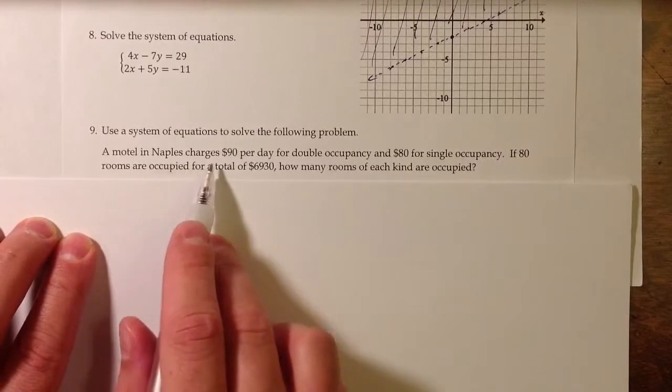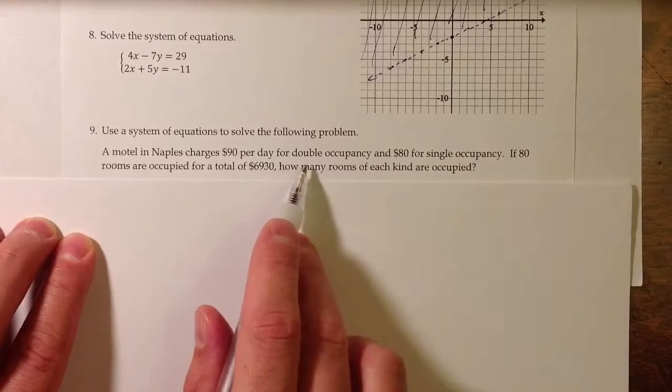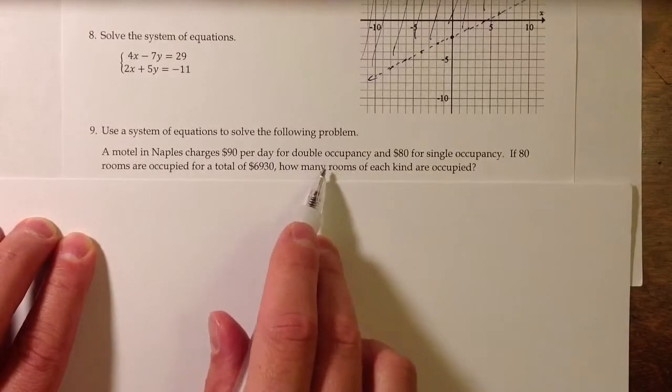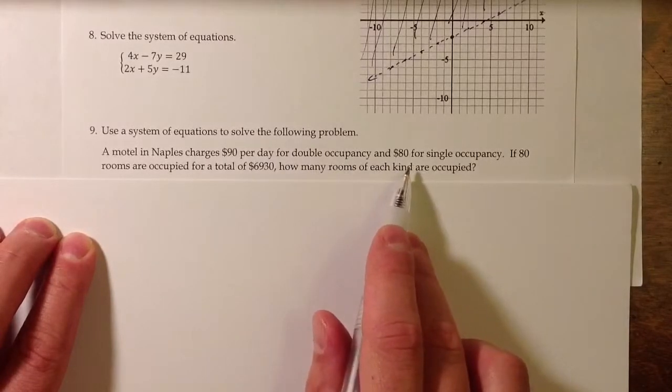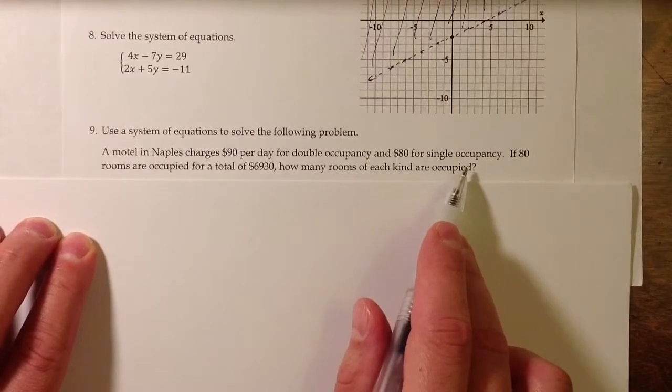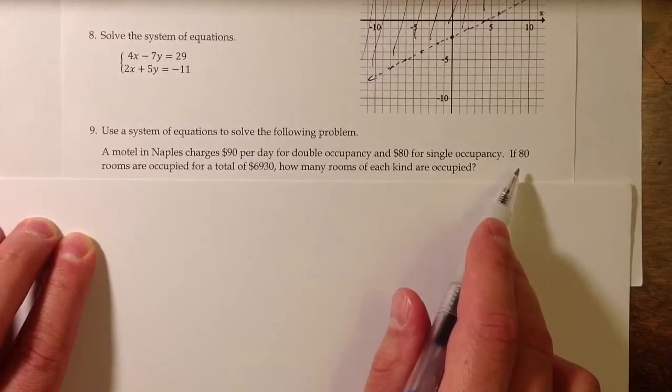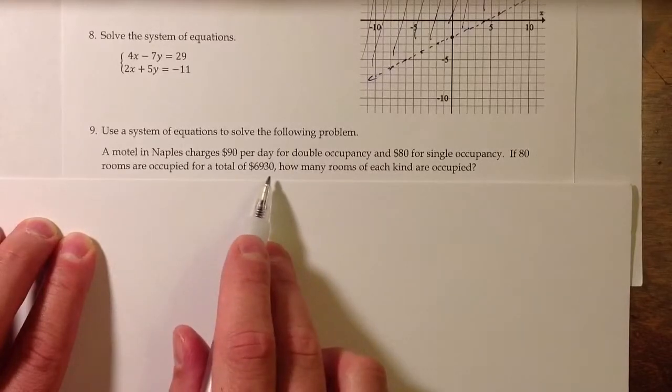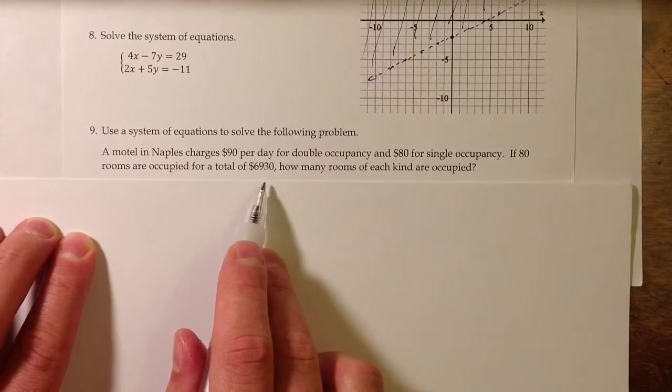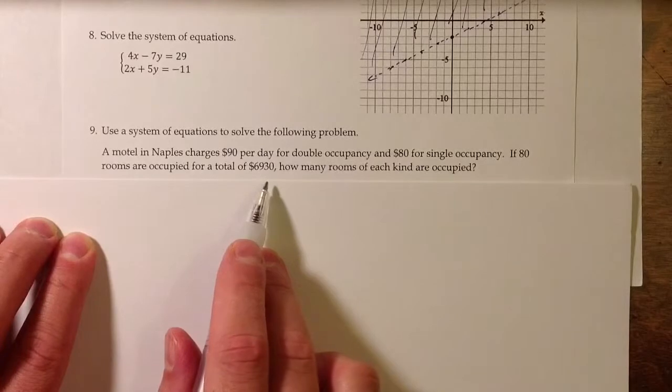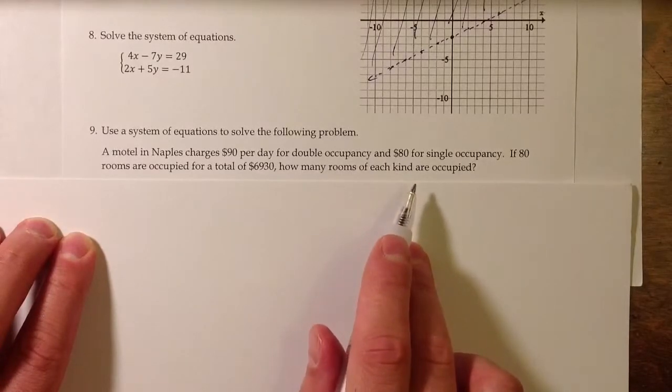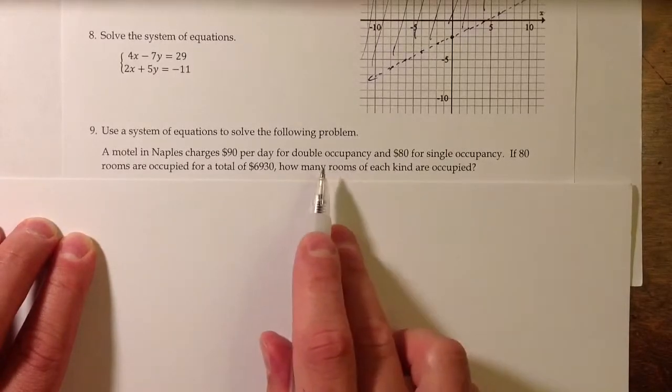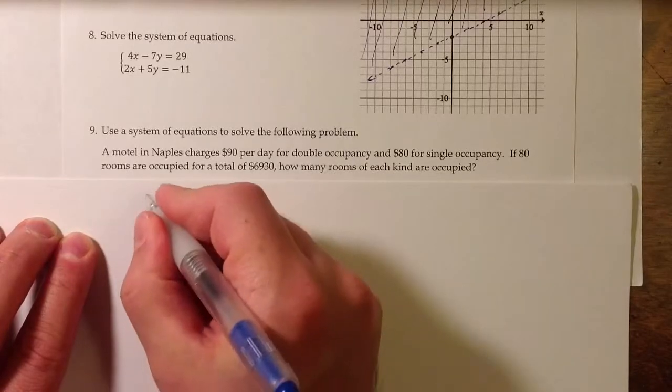A motel in Naples charges $90 per day for double occupancy if there are two people in the room, and $80 for single occupancy. We know that 80 rooms are occupied, and the total revenue is $6,930. We'd like to figure out how many rooms of each kind are occupied. So how many double occupancy, how many single occupancy rooms.